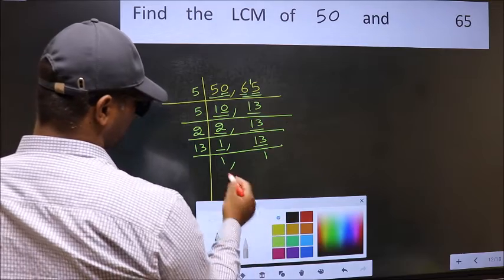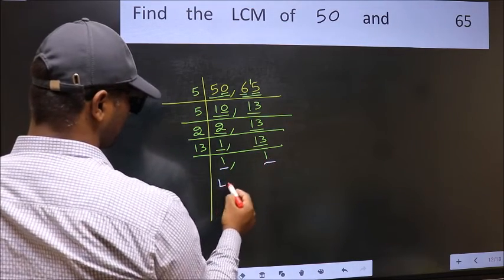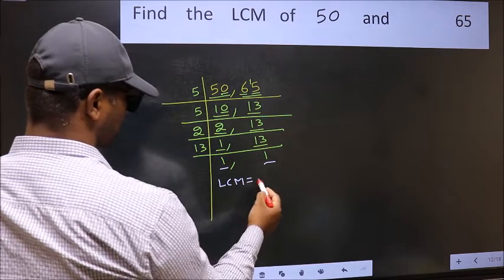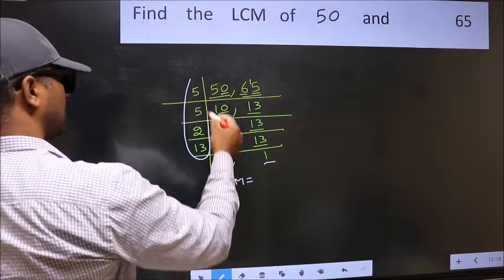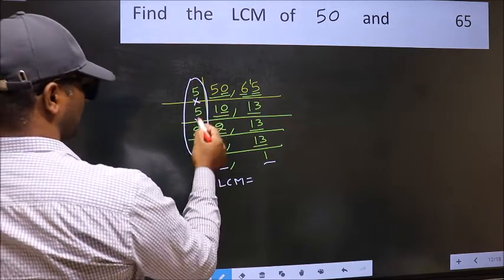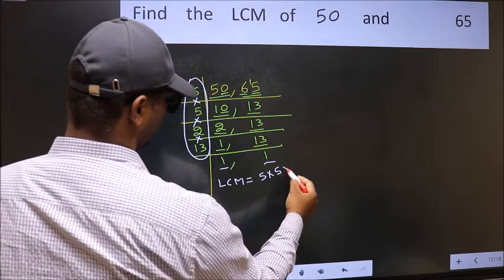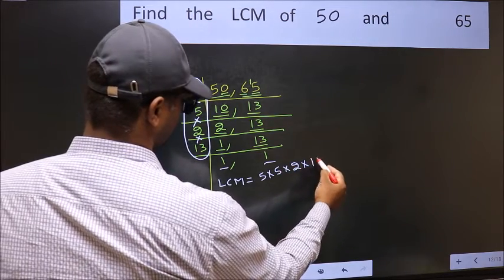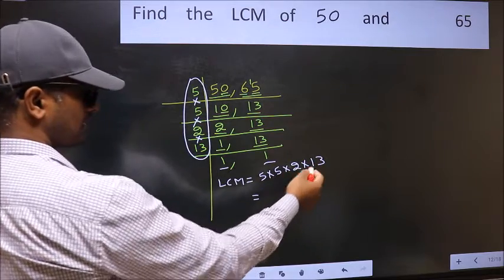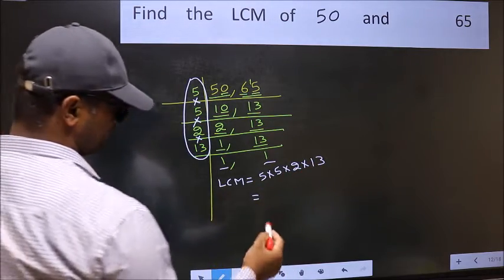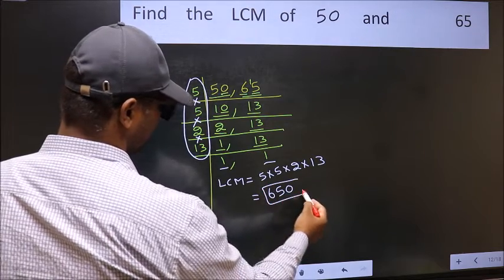We got 1 in both places, so our LCM is the product of these divisors. That is 5 times 5 times 2 times 13. When we multiply these numbers, we get 650 as our LCM.